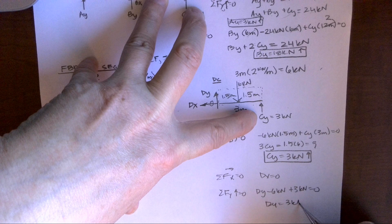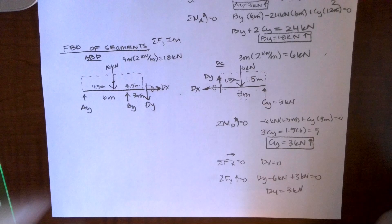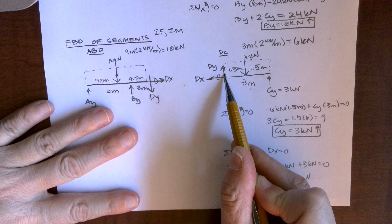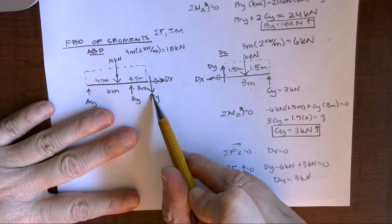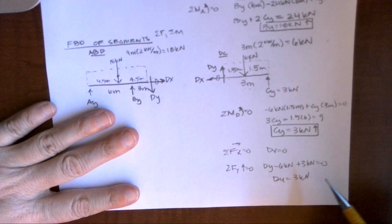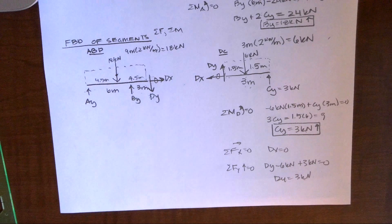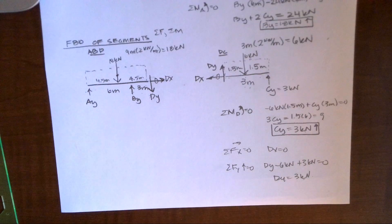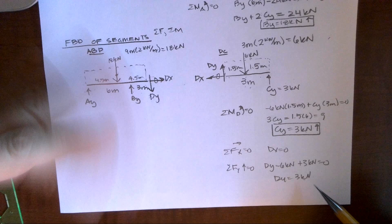Now, I'm going to sum forces in the Y direction. So, I get DY minus six kilonewtons plus three kilonewtons equals zero. DY equals three kilonewtons. For this internal, I'm not going to show up or down because this figure, DY is going up. This figure, DY is going down. I know that we're transferring three kilonewtons in the Y direction across that pin.